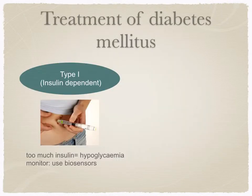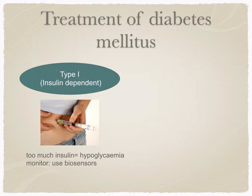How do you treat diabetes mellitus? Type 1 is treated with injections of human insulin. Insulin can't be taken by mouth because, being a protein, it would be digested in the alimentary canal. So it is injected, typically two or four times a day. The dose of insulin must exactly match that required for the glucose intake. If too much insulin is injected, the patient will experience hypoglycemia, where blood glucose levels drop and could result in unconsciousness. To ensure the correct dose is injected, blood glucose levels are monitored using biosensors.